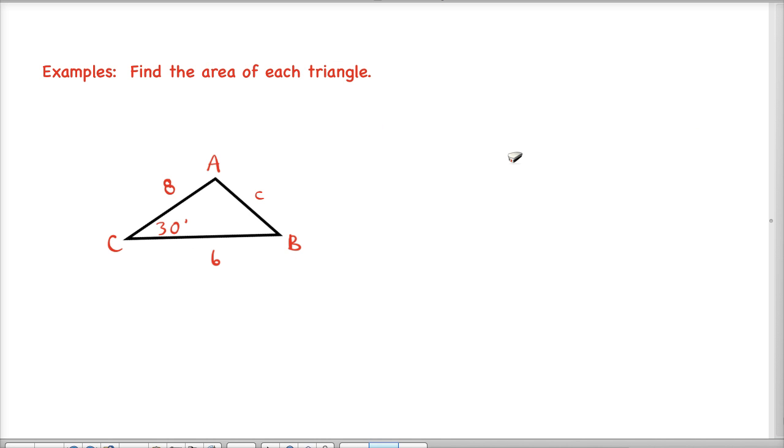So let's do a couple examples. First one we'll do here is to find the area of this triangle and we have triangle ABC. We say that angle c is 30 degrees, and then if we look at this, that means that side a is 6 because that's the side that's opposite angle a, and side b is 8 because that's the side that's opposite angle b.